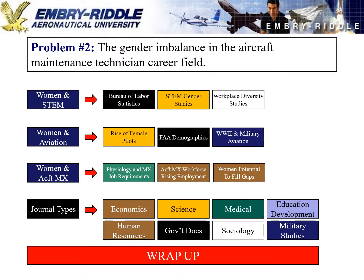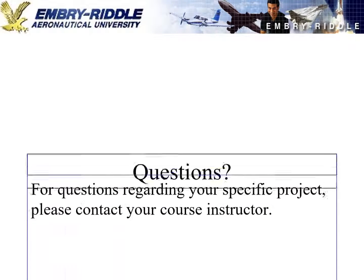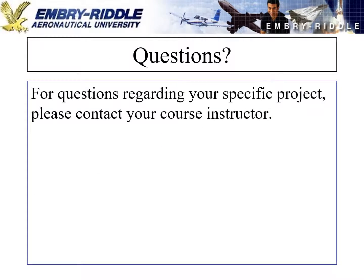What we end up with is another problem that has a clearly mapped-out literature review path for the student researcher, with articles and literature that connect to the problem and demonstrate a full understanding when making recommendations, conclusions, and interpreting data. I hope this presentation was helpful. By following these simple mind-mapping tactics, it can make your life a lot easier as you start collecting literature that supports your problem. If you have any questions, please contact your instructor.